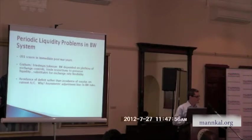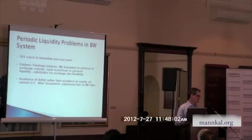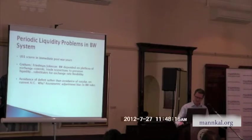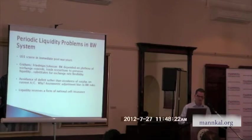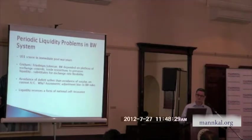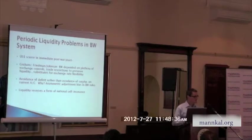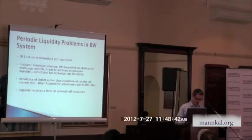Deficit countries had to retrench spending and borrow from the IMF in the short term because they weren't allowed to adjust exchange rates. Borrowing from the IMF was conditional, often very onerous. When forced to devalue currencies, they reached the end of a crisis with inflation implications, and it wasn't politically popular. So official reserves of liquidity kind of acted as national insurance, especially for small economies like Australia and New Zealand, against the volatility of export receipts.